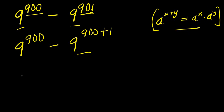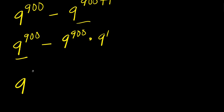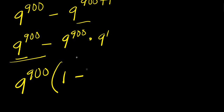Applying this rule here, this is 9^900 minus 9^900 times 9^1. From here, what we can do is factor out the common term, which is 9^900. So we have 9^900 times — dividing out 9^900 — we simply have 1 minus 9.